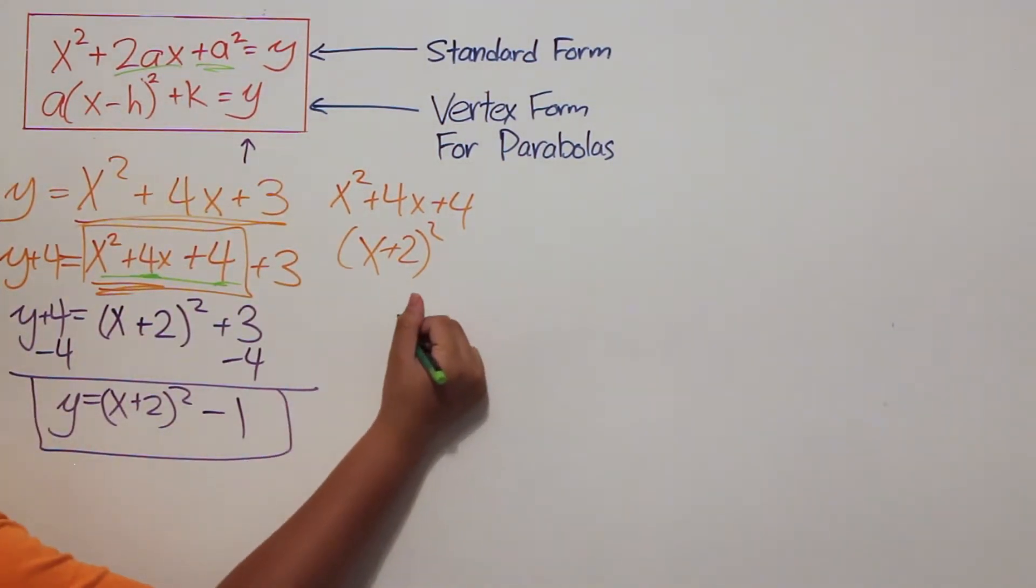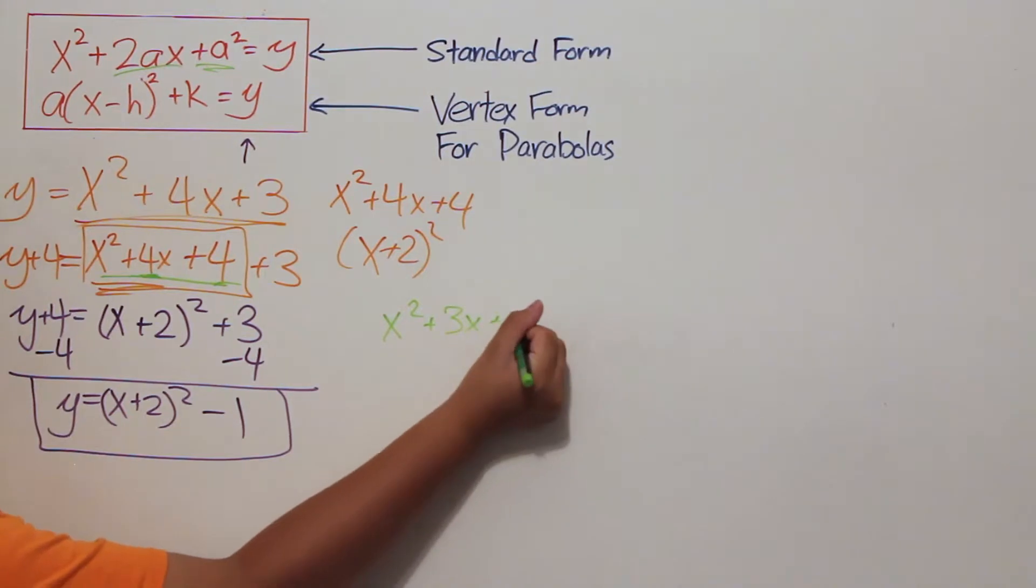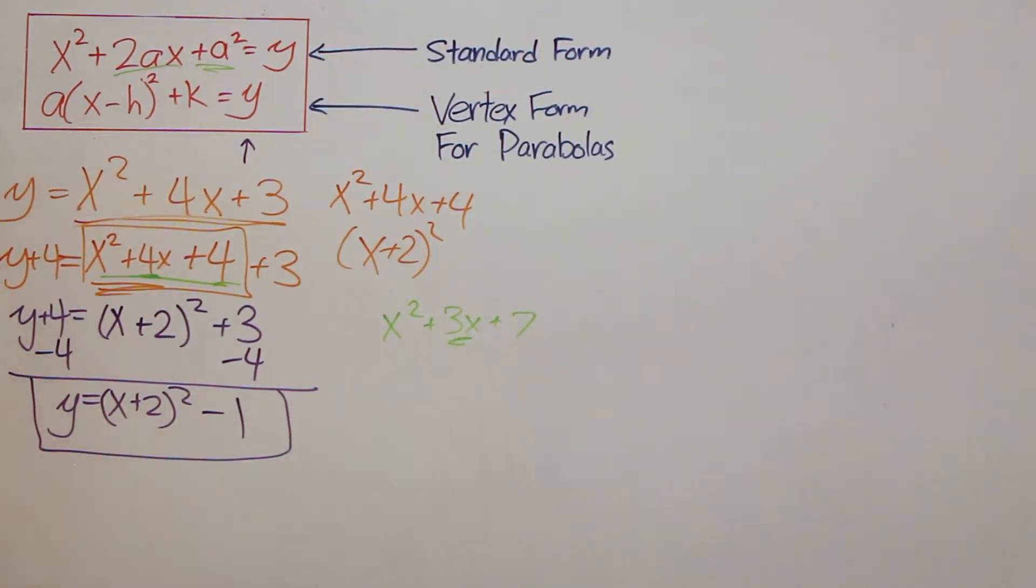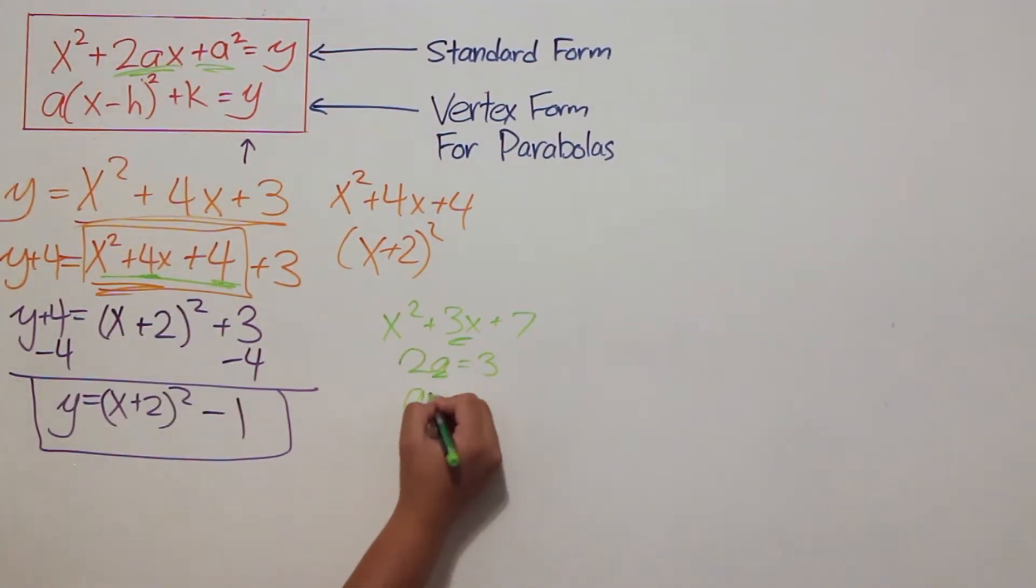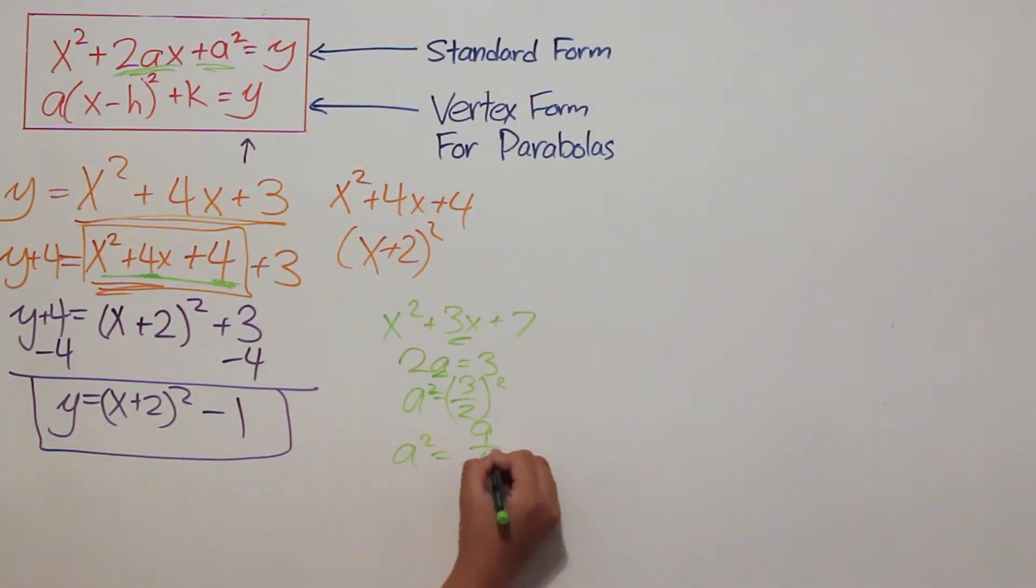Let's say it was a different number and we were trying to find a squared. For instance, if we had x squared plus 3x plus 7, 3 is not a perfect square, so we would use 2ax to get 2a equals 3, which gives us a being equivalent to 3 halves and a squared equaling 9 over 4.